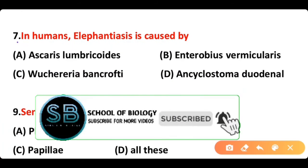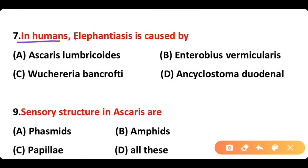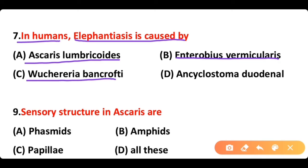Question 7: In humans, elephantiasis is caused by: A) Ascaris lumbricoides, B) Enterobius vermicularis, C) Wuchereria bancrofti, D) Ancylostoma duodenale. The correct answer is option C. Wuchereria bancrofti causes elephantiasis in humans.